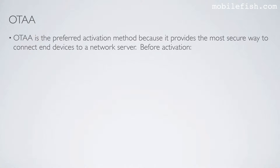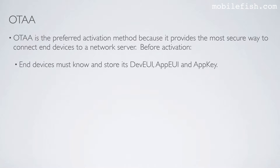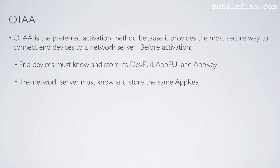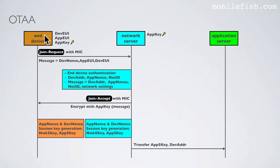OTA is the preferred activation method because it provides the most secure way to connect ANT devices to a network server. Before activation, ANT devices must know and store its DevEUI, AppEUI, and AppKey. The network server must know and store the same AppKey. Both AppKeys are the same.